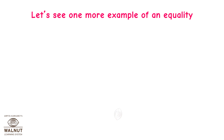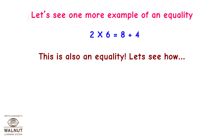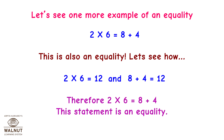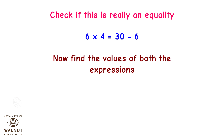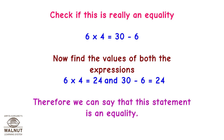Let's see one more example of an equality. 2 into 6 is equal to 8 plus 4. This is also an equality because 2 into 6 is equal to 12 and 8 plus 4 is equal to 12. Therefore, this statement is an equality. Check if this is really an equality: 6 into 4 is equal to 30 minus 6. 6 into 4 is equal to 24 and 30 minus 6 is equal to 24. Therefore, we can say that this statement is an equality.